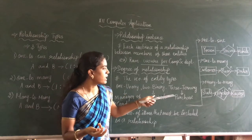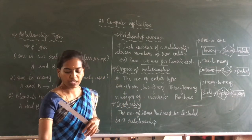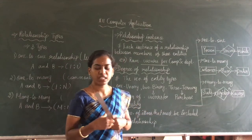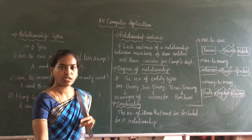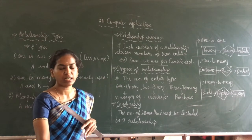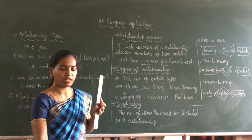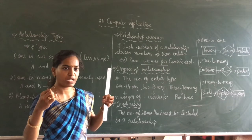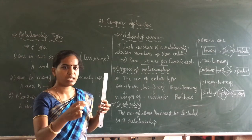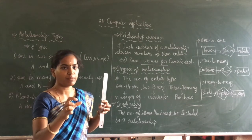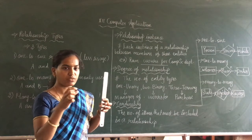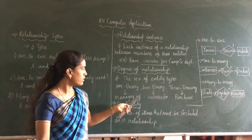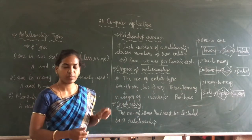The third degree is ternary. For example, if a customer purchases items, it also involves a shopkeeper. So we have three entities: customer, product, and shopkeeper. Because three entities are involved, it is a ternary relationship. This is all about degree of relationship — it is an easy topic and you can read it in your textbook to understand it easily.